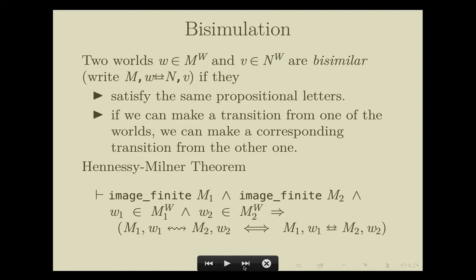The notion of bisimulation is very important for modal model theory. For two worlds W in M and V in N, W and V are bisimilar if they satisfy exactly the same propositional letters, and once we can make a transition from one of W or V, we can always make a corresponding transition from the other world. We write a specific symbol to denote bisimulation. By induction on modal formulas, bisimilar worlds are modally equivalent. The most significant theorem for the basic theory of bisimulation is the Hennessy-Milner theorem, which says that for image-finite models, bisimulation and modal equivalence coincide. Here, image-finite models are models where for each world W, the set of worlds that W is related to is finite.